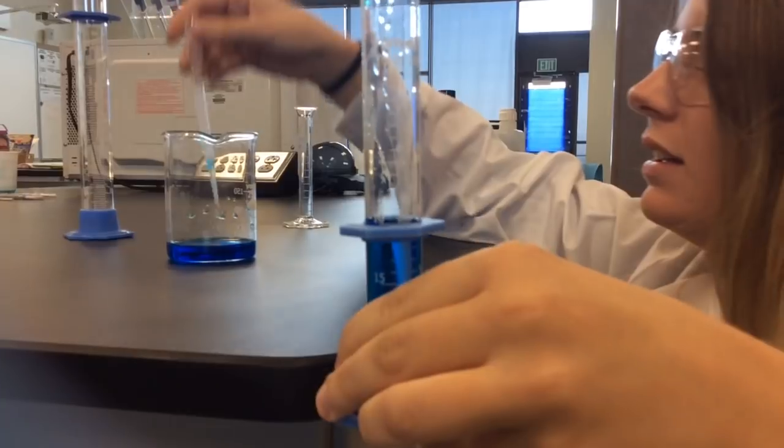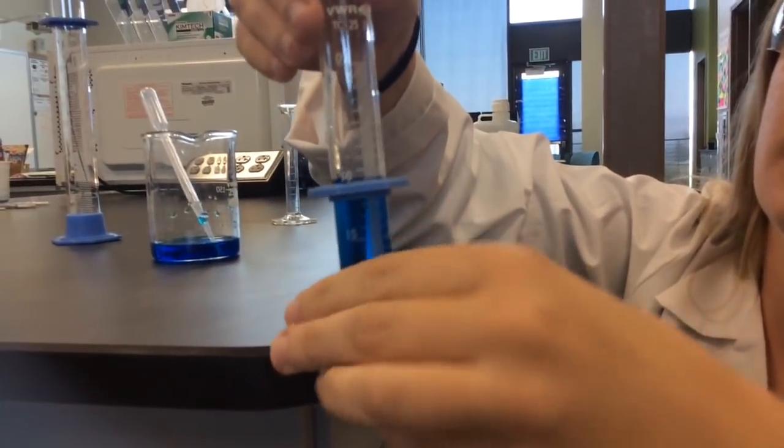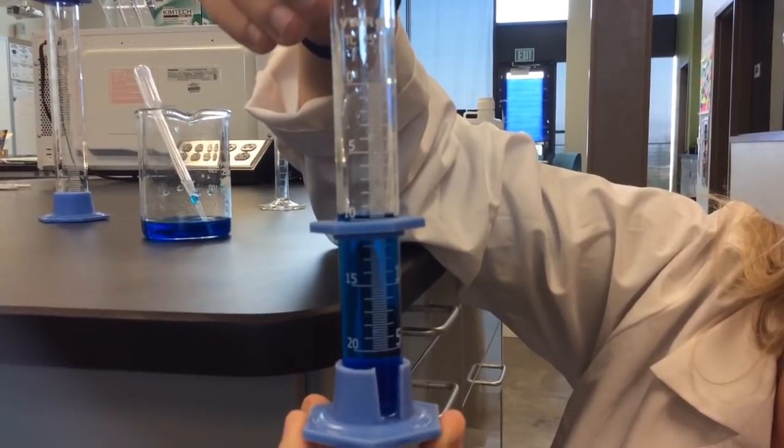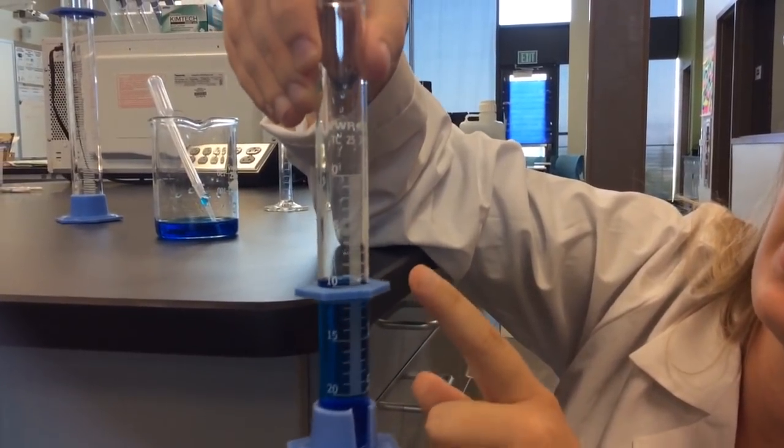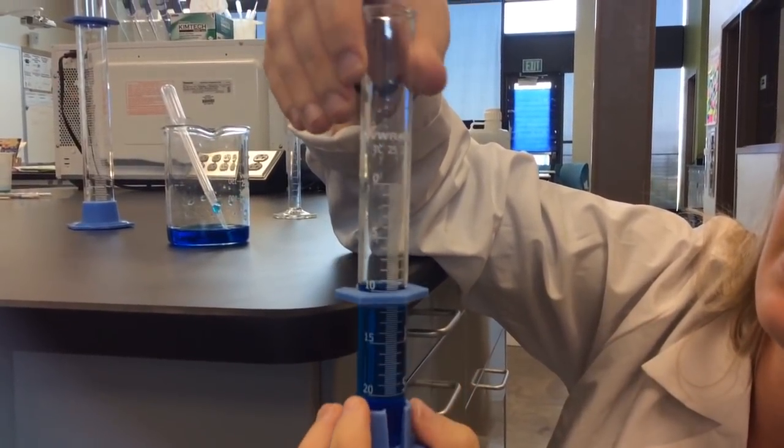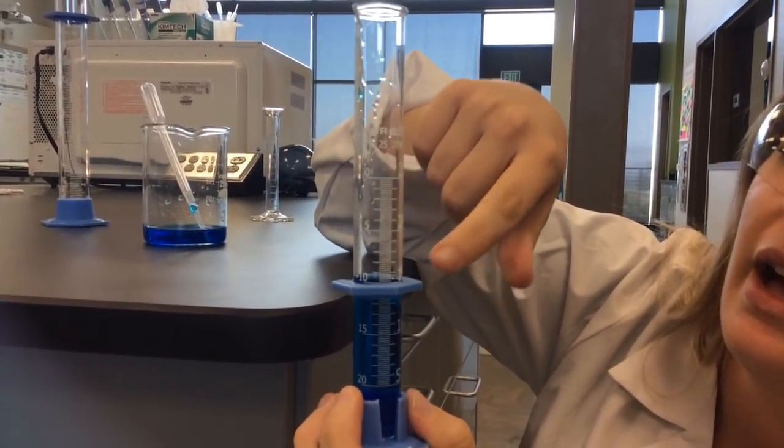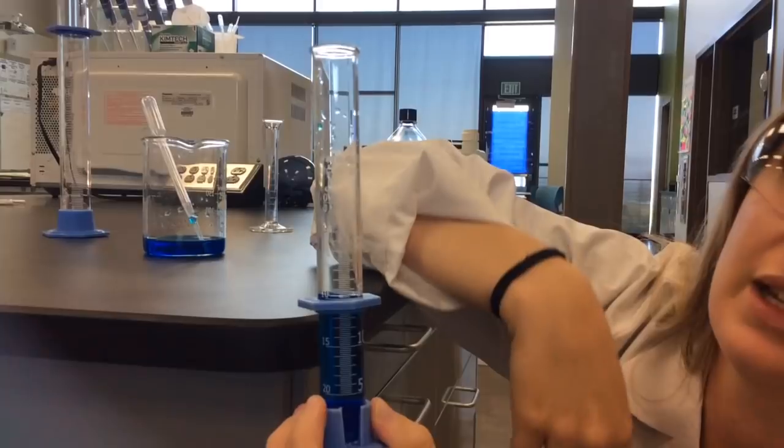And now we have maybe just one drop over, but the meniscus at the 15 milliliter mark. So make sure when you're measuring that you use the transfer pipette to get those last couple of drops so the meniscus is touching the bottom of the measurement line for 15 milliliters.